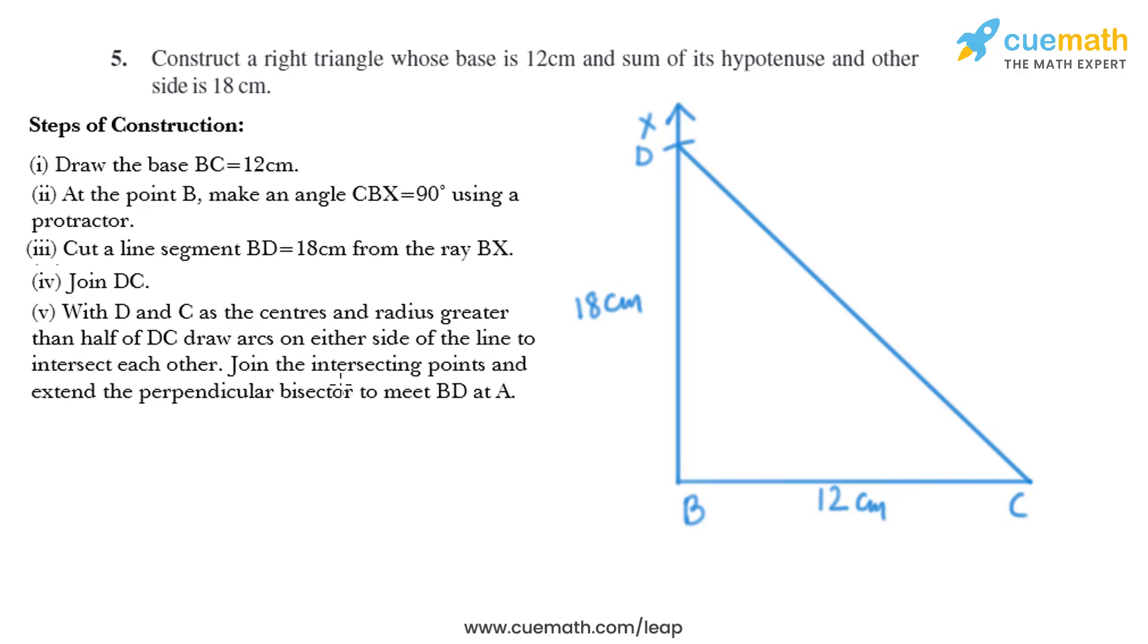Join the intersecting points and extend the perpendicular bisector to meet BD at A.